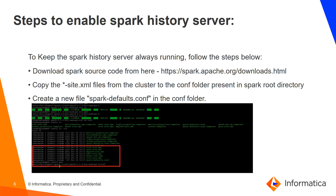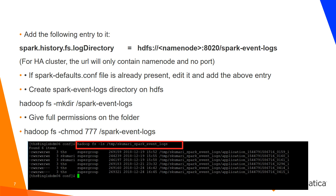Once this is done, I would need to configure the log directory where the Spark event logs will be written. This has to be done using the property spark.history.fs.logDirectory. The value for this will be an HDFS location where I will be writing the Spark event logs. These are essentially the application logs. As seen in the screenshot, I have a couple of application logs stored at the directory /temp/skumari_spark_event_logs.